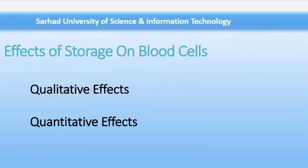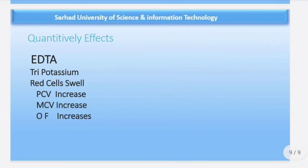Other changes take place when blood is allowed to stand in vitro at room temperature, around 18 to 25 degrees centigrade, or more rapidly at higher ambient temperatures. The most important anticoagulant used is EDTA, which has a greater effect as the tri-potassium salt than as the di-potassium salt. Red cells start swelling, resulting in increases in PCV and MCV. Osmotic fragility slowly increases and the sedimentation rate decreases. Leukocyte and platelet counts gradually fall.